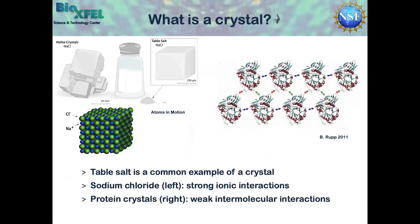What is a crystal? The most relatable example is table salt. These crystals are quite different from protein crystals — they are held together by strong ionic interactions, whereas protein crystals involve sparse, weak intermolecular interactions. Because they have such sparse, weak intermolecular interactions, you can leverage those solvent channels within the protein crystal. Diana mentioned that on average crystals are 30 to 70 percent solvent content — so these are fully hydrated. You can use these solvent channels for the diffusion of small molecules, ligands, and drugs.